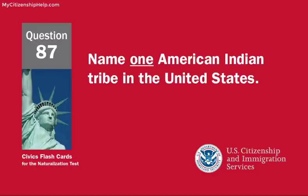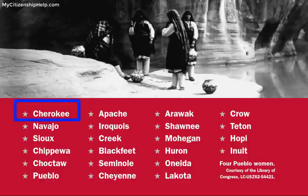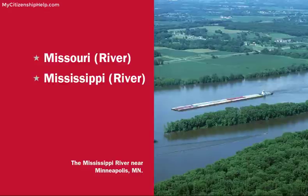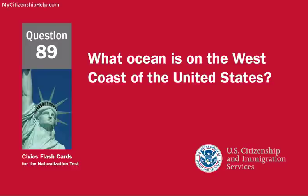Name one American Indian tribe in the United States. Cherokee. Name one of the two longest rivers in the United States. The Missouri River. What ocean is on the west coast of the United States? The Pacific Ocean.